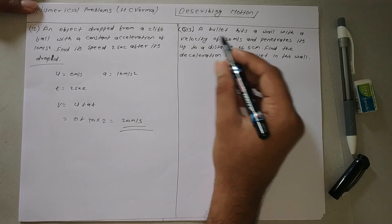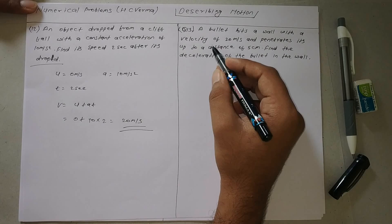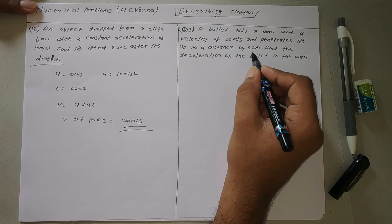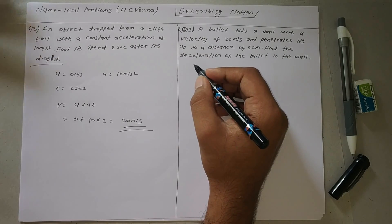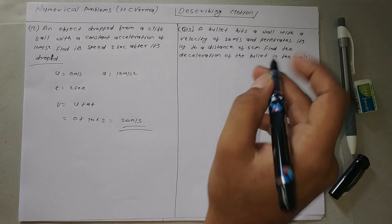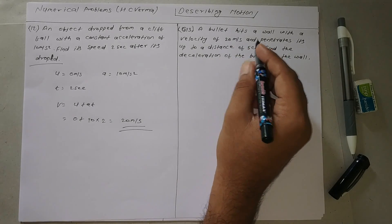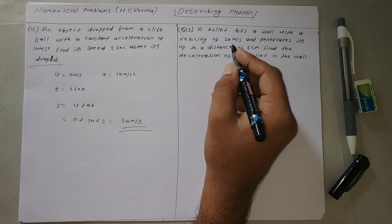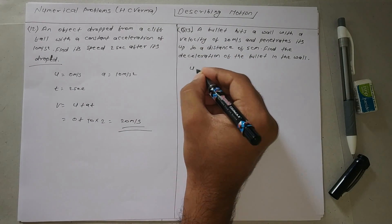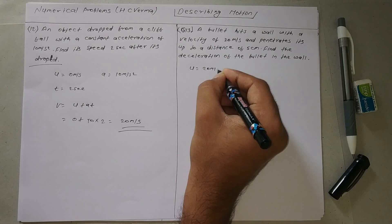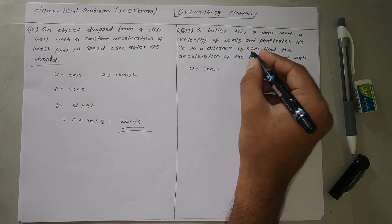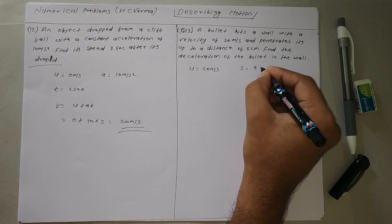The next question: a bullet hits a wall with a velocity of 20 meters per second and penetrates it up to a distance of 5 cm. Find the deceleration of the bullet in the wall. So u is 20 meters per second, and s is 5 cm.